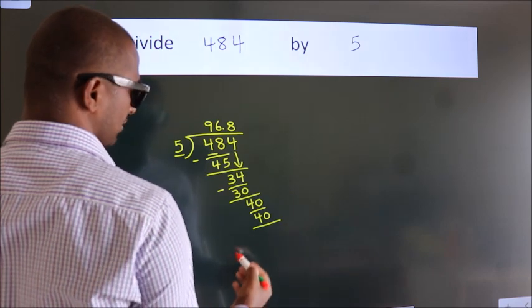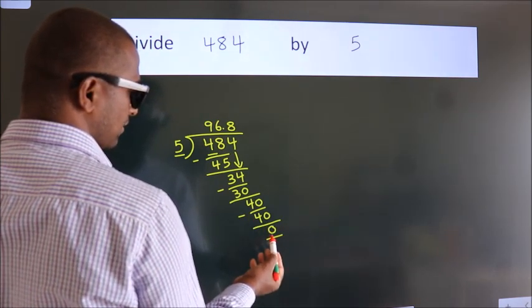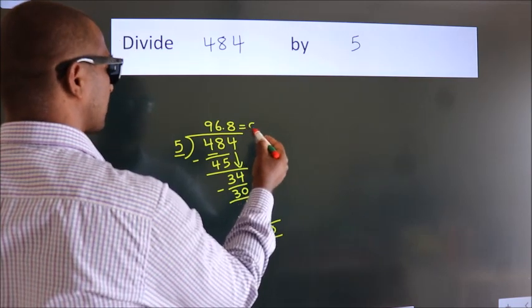Now we subtract and get 0. We got remainder 0, so this is our quotient.